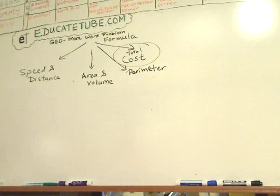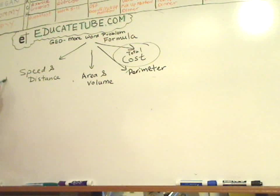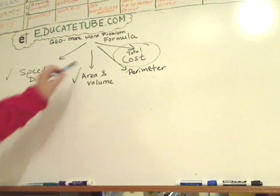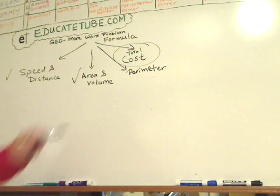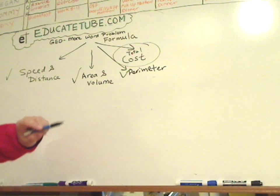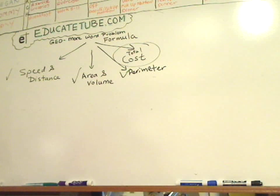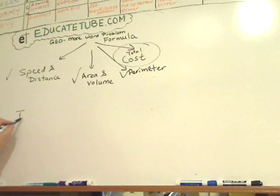We're now near the end of the basic formula section of GED. I talked about speed and distance, I talked about area and volume, I talked about parameters, and then we're going to finish off with the total cost formula.